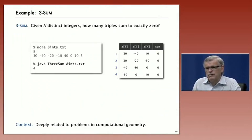For a running example, we're going to use the so-called three-sum problem. And it's an easy to state problem. If you've got N distinct integers, how many triples sum to exactly zero? For example, in this file 8ints.txt, which has eight integers in it, there's four triples that sum to zero.